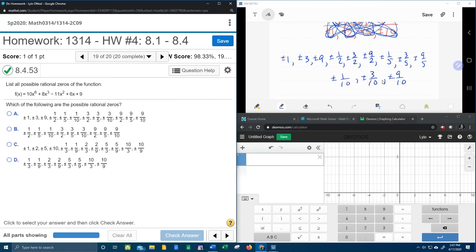But that is all of the possible rational zeros for this function. And so now I have to pick the correct answer. And I can see that the whole numbers, 1, 3, and 9, the only answer that has those, 1, 3, and 9, is A.